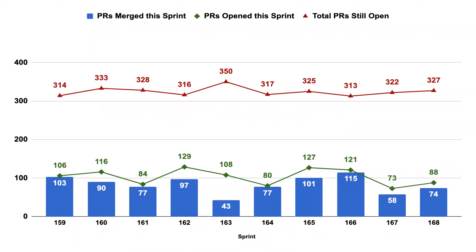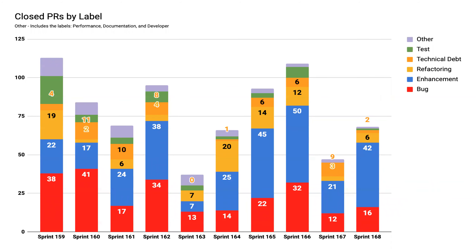So this sprint, we had an uptick in the number of pull requests both opened and merged. We were at 74 merged and 88 open in the sprint. As you'll see going through the presentation, there were quite a number of enhancements. The spread chart showed 42 enhancements versus 16 bugs. Really looking forward to hearing about all the enhancements we had for the sprint. Over to Kavya.